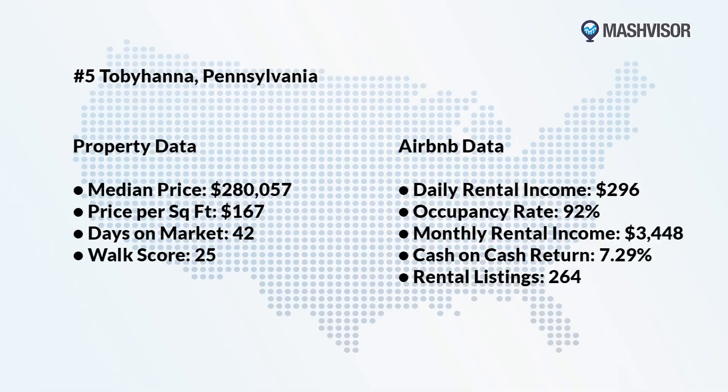Number 5: Tobyhanna, Pennsylvania. This is a hidden gem of the Pocono mountains. There's a lot to do here for families — water parks, theme parks, and a lot of great tourism draws. It holds a 92% occupancy rate and a 7.29% cash-on-cash return.